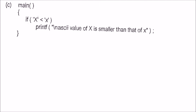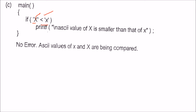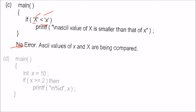Then we have capital X less than small x. Capital X and small x — capital X has a lower ASCII value than small x, so this is true. Characters are internally treated as integers, so there is no error here.